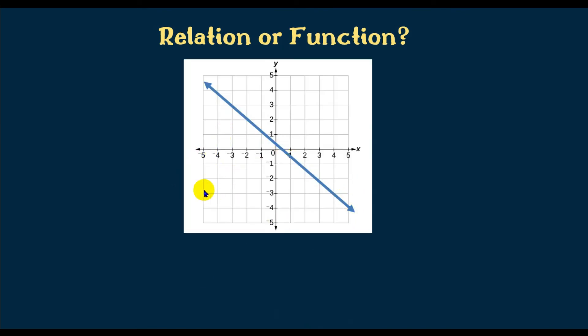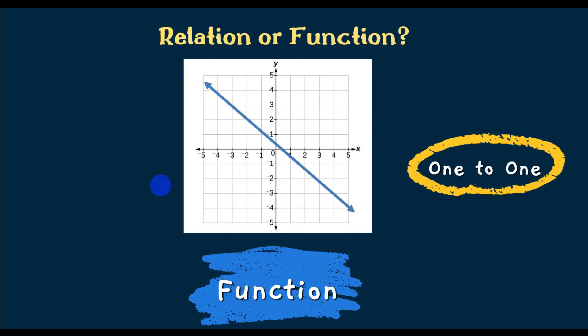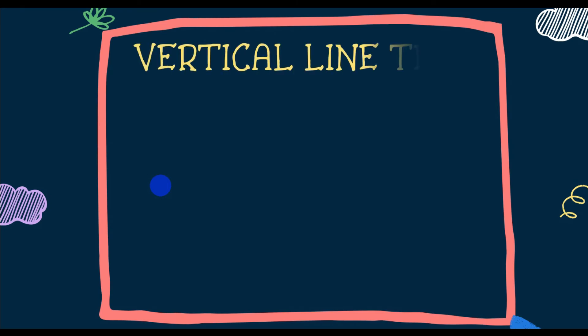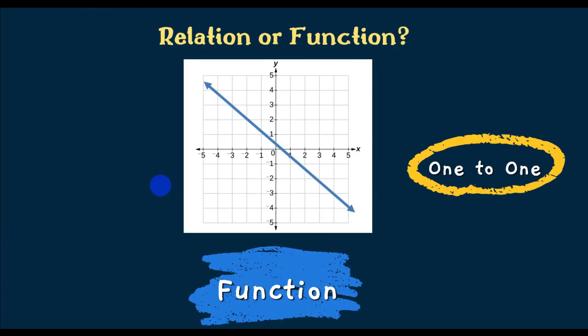Now we have a graph. Looking carefully, no x value repeats, so this is a function with one-to-one correspondence. Instead of reading coordinates manually, we can use the vertical line test. A relation is a function if a vertical line drawn through its graph passes through only one point. This graph passes the test — the vertical line touches only one point.